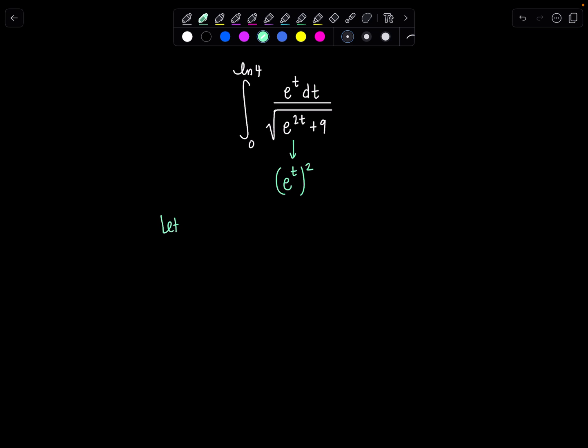I went ahead and let u equal e to the t, and then du would be e to the t dt. Now we also need to switch our limits of integration. Currently these limits belong to the variable t, but I need to switch them to be limits for u. So I'm going to substitute them in for t. u of 0 would be e to the 0, that's 1, and then u of natural log of 4 would be e to the natural log of 4, that's 4. So those are our new limits of integration.